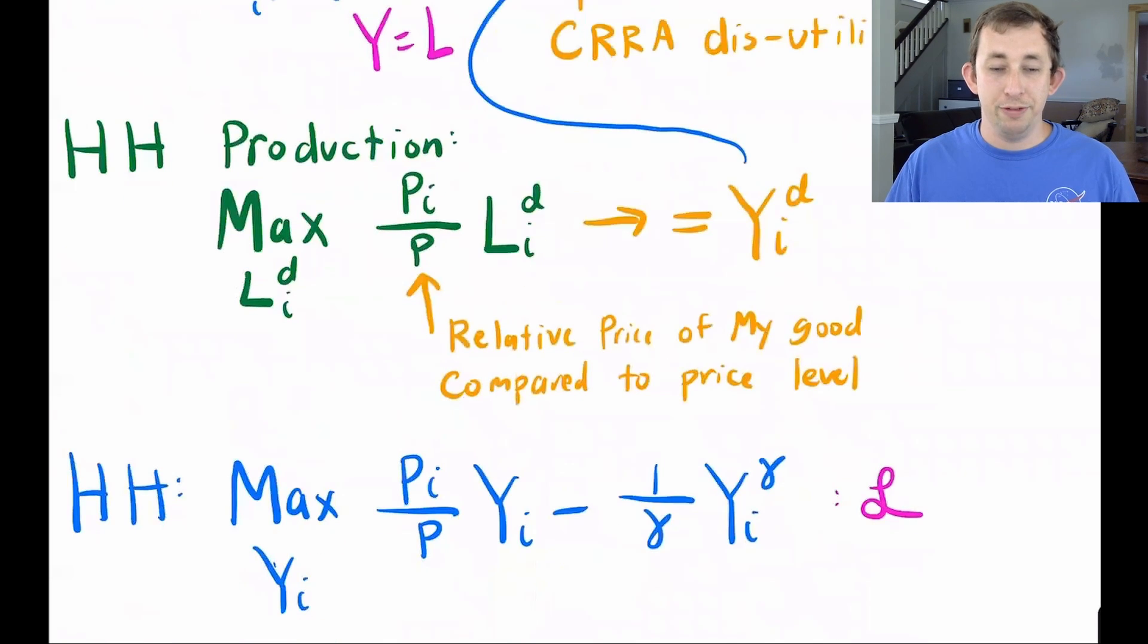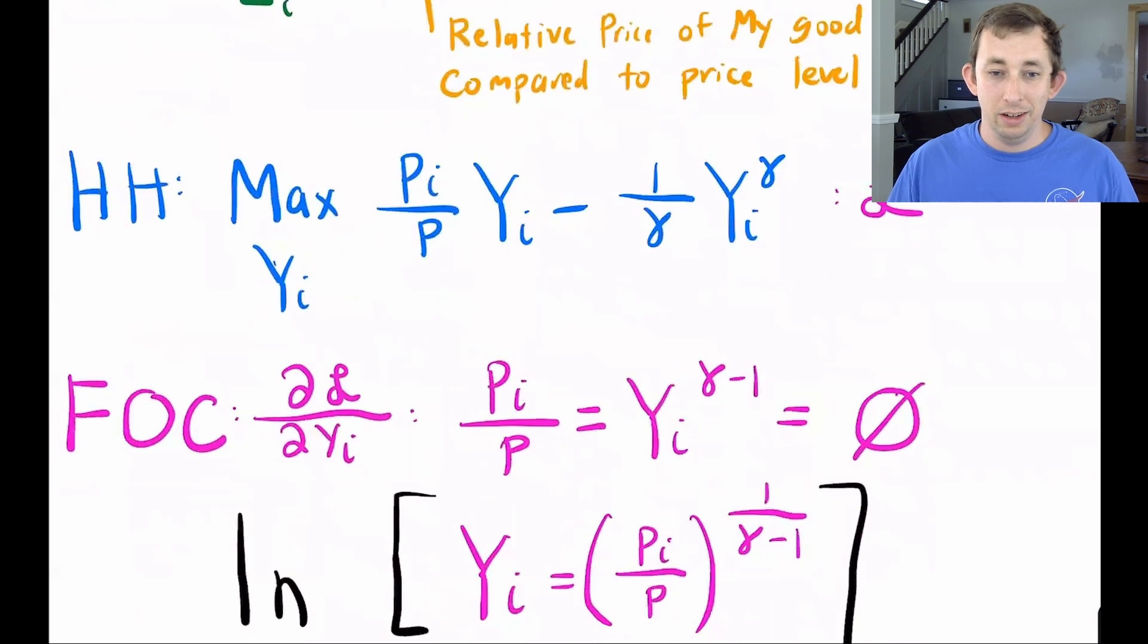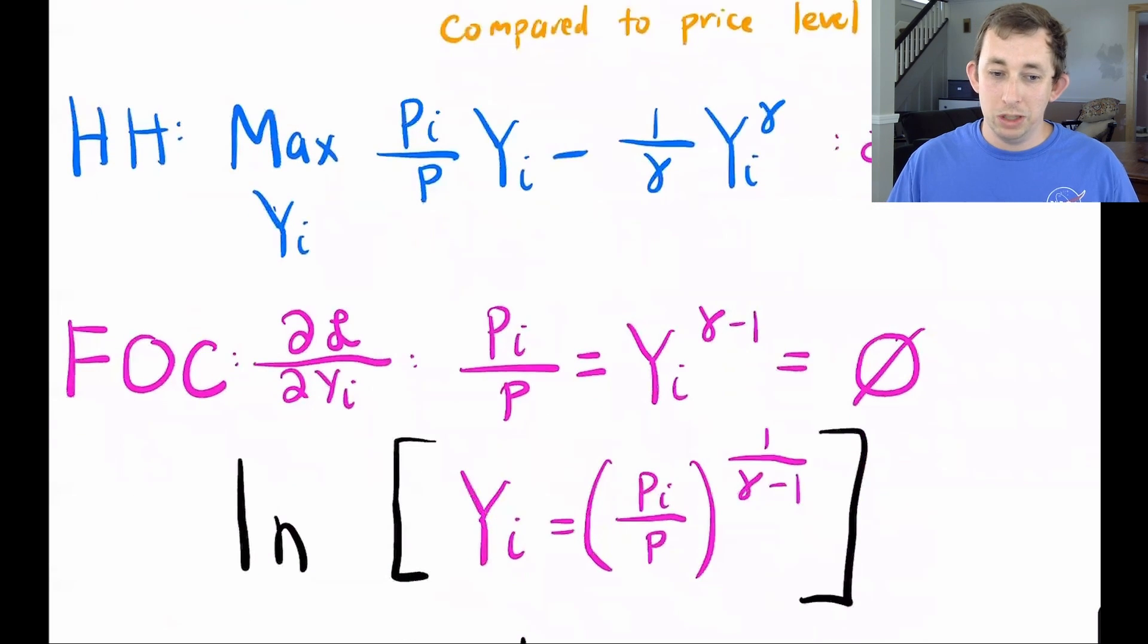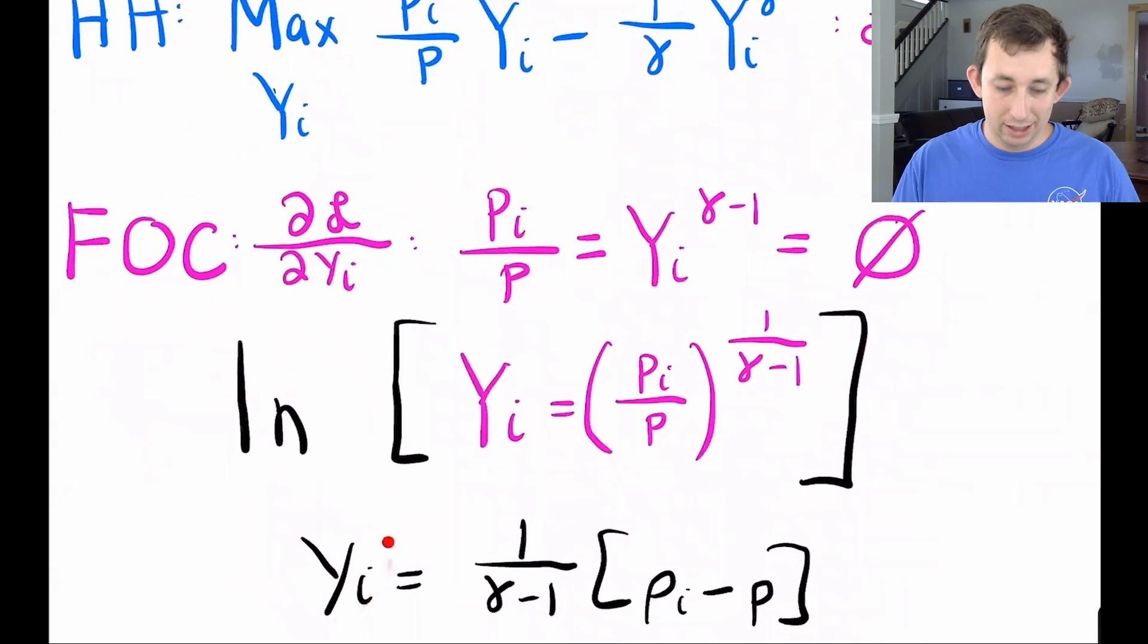Now if we keep going, we can take a first order condition of the consumption part of this household problem, where notice that I've already done that substitution of l for y, that just makes it easier so that I can take the first order condition with respect to one variable. And then I am going to take the natural log of this whole thing, which when I take the natural log, I'm going to get the natural log of output is one over gamma minus one times pi minus p, or the natural log of pi minus the natural log of p. Notice that this is the difference between the overall price level and my price level. So this is what we're going to call a relative price.